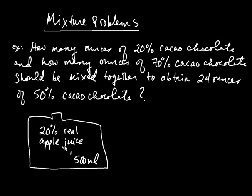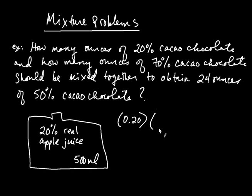What's inside the bottle? It's not all apple juice — only 20% is apple juice. The rest is water, sugar, and whatever else. So of these 500 milliliters, only a certain number are pure apple juice. To figure that out, you take the percentage — 0.20 — and multiply it by the amount, 500. When you multiply these together, you get 100. That means 100 milliliters are pure apple juice.